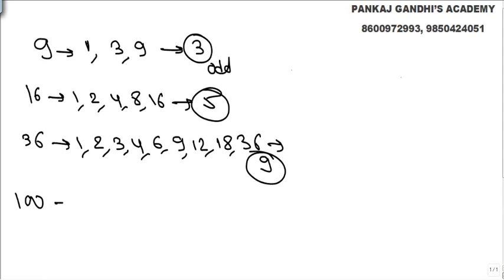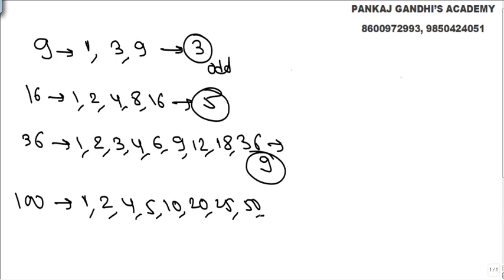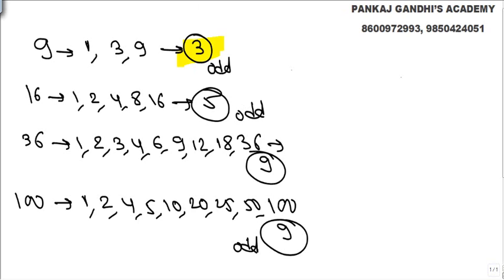Another example: 100 is divisible by 1, 2, 4, 5, 10, 20, 25, 50, and 100 — 9 factors, again odd. So the concept is: a perfect square number has an odd number of factors. You can check it.